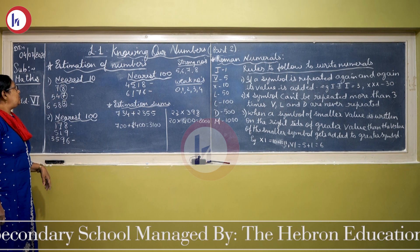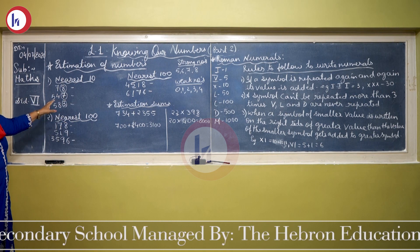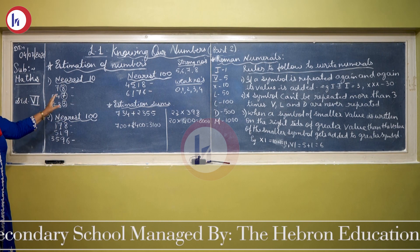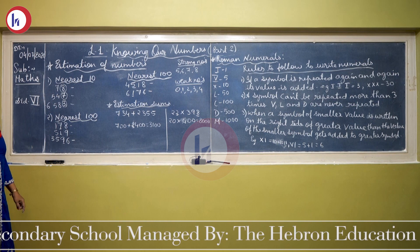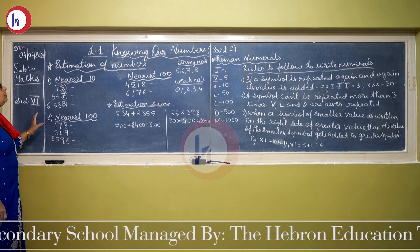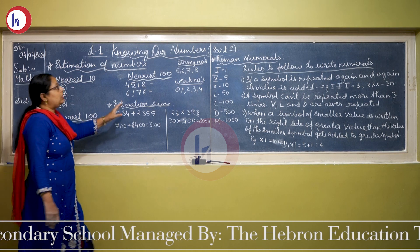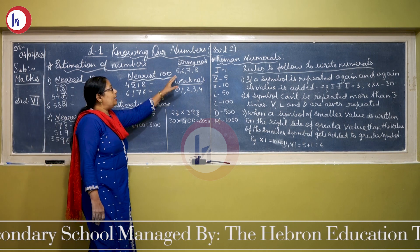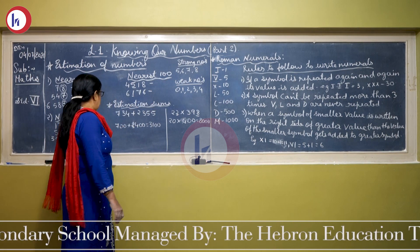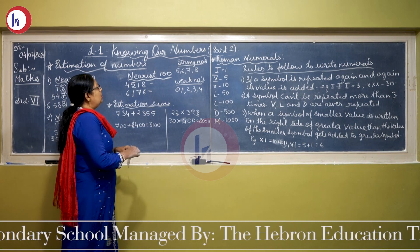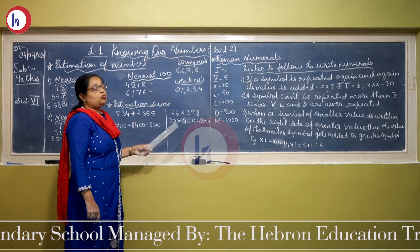So today I will explain about the rounded-off number, the nearest number. Before understanding the estimation, first we will understand the strong numbers and the weak numbers.